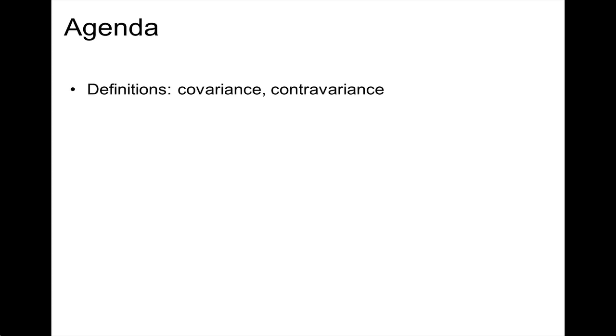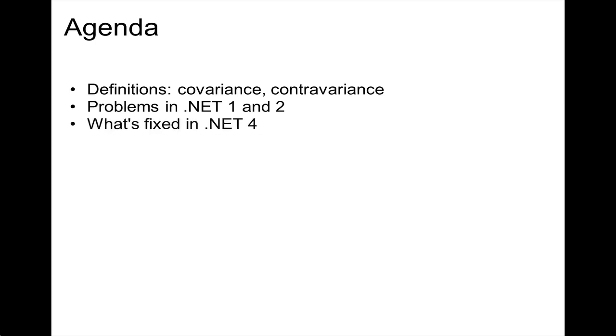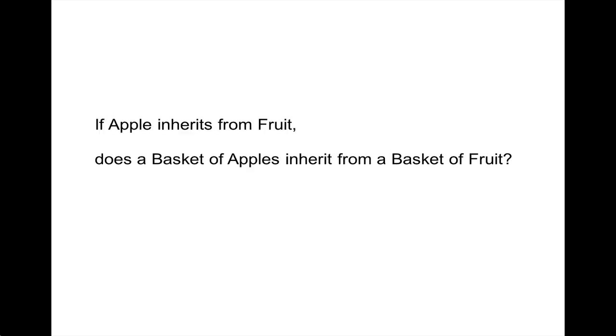During this brief talk I will define what covariance and contravariance mean, I will explain some problems in .NET 1 and 2, and I'll show you what's fixed in .NET 4.0.